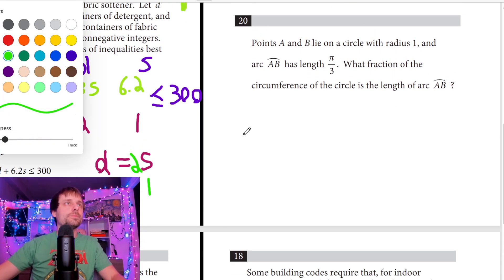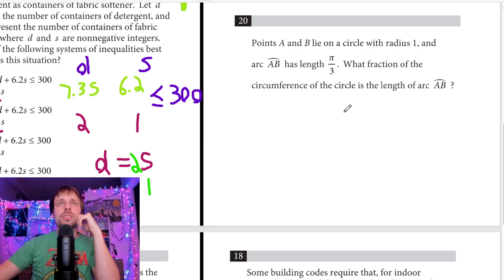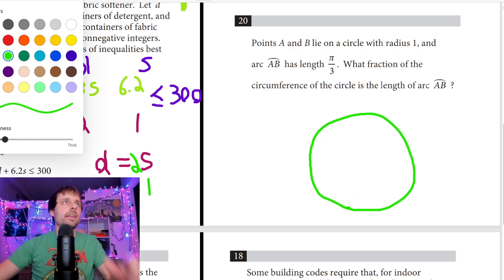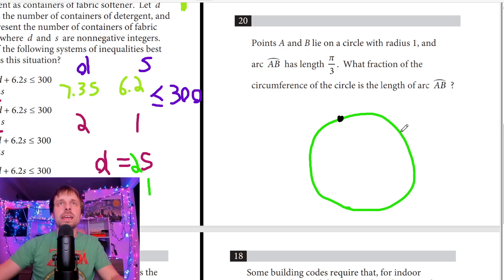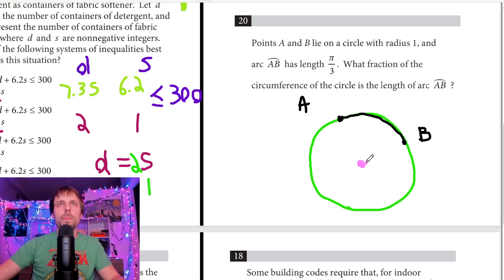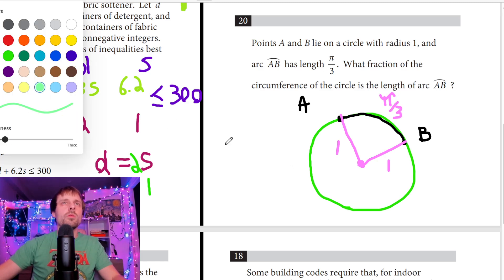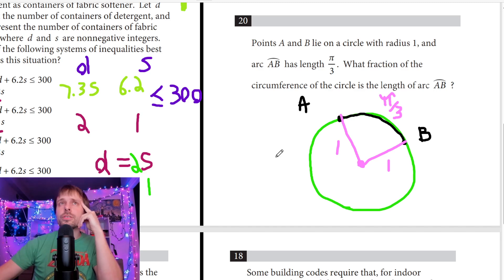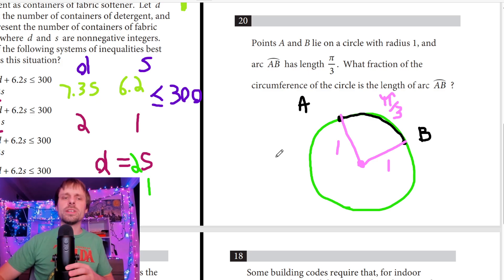And the final one on this page, another good refresher here. Let's check this one out. Points A and B lie on a circle. So I'm already going to draw A and B. It doesn't matter. I'll maybe say like A, B and I see arc AB. So I'll just highlight this. And what do they want to know about this? They say radius one. So that's important. I could just draw these two just in case one and one. It has length π/3. And what do they want to know about this? What fraction of the circumference of the circle is the length of arc AB?